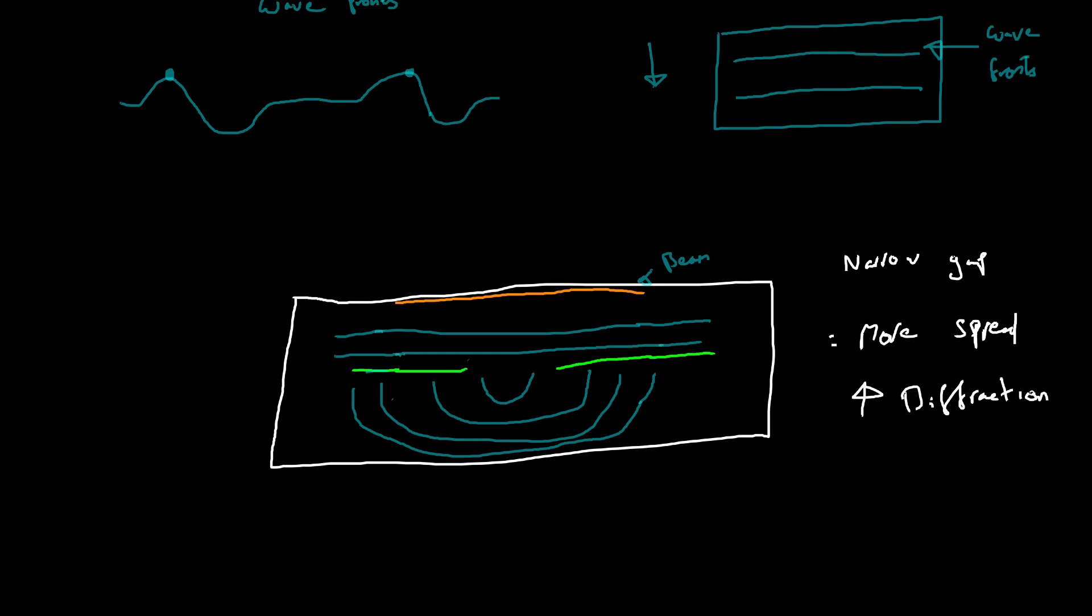Okay, and when you've got a really wide gap, you have less diffraction. Now it turns out that the greatest level of diffraction, so the greatest diffraction, is at the point where the gap, so let's say that this gap is equal to the wavelength of the wave. Okay, so when gap equals wavelength, and if you remember, sometimes we denote wavelength as lambda. So when the gap is equal to the wavelength, that is when you get the greatest diffraction.